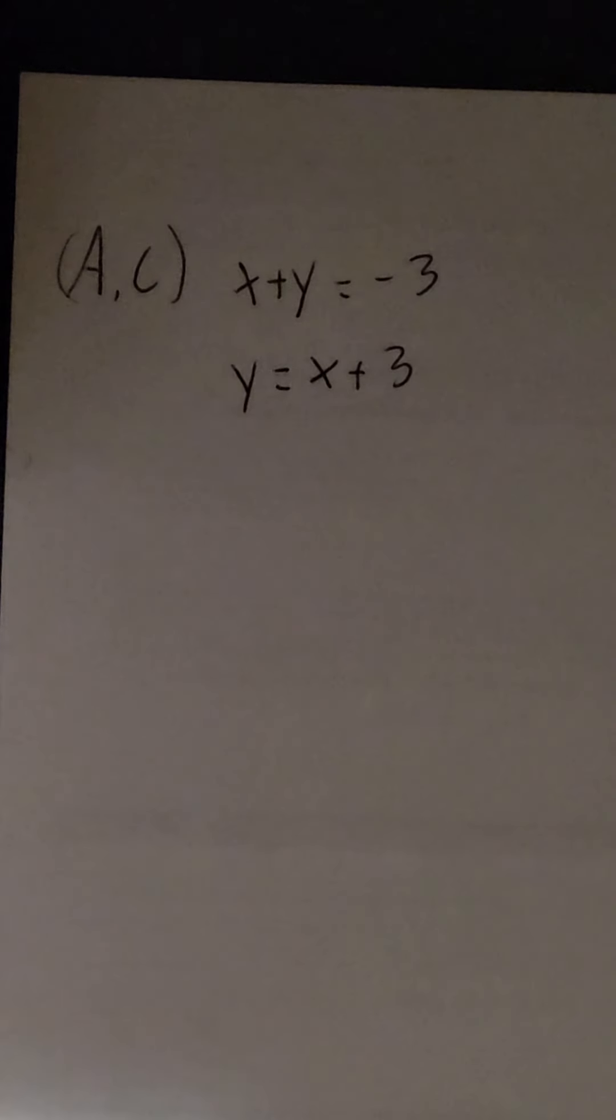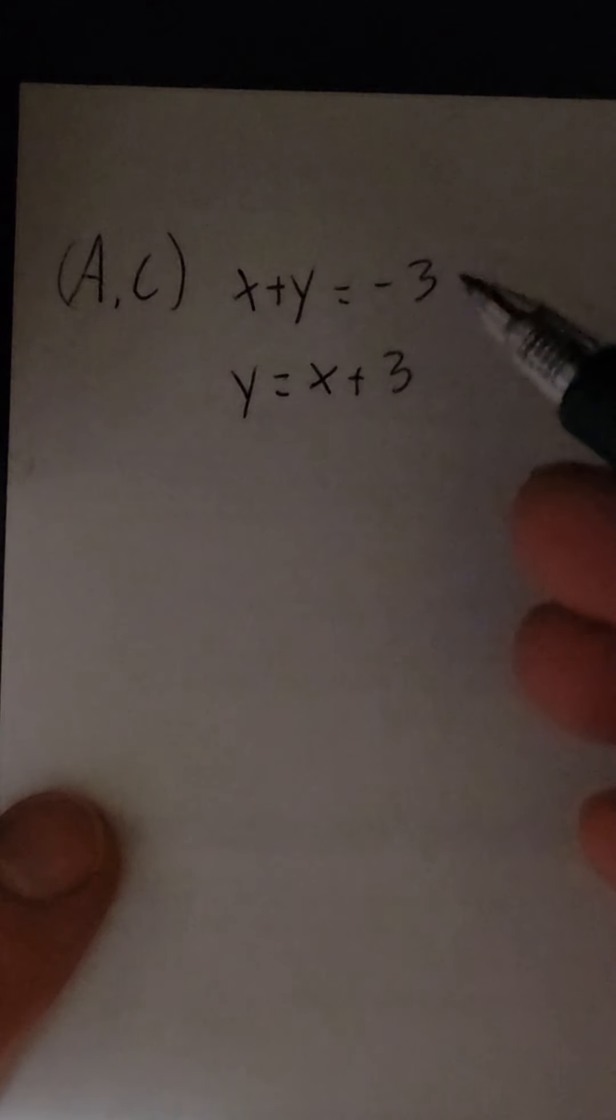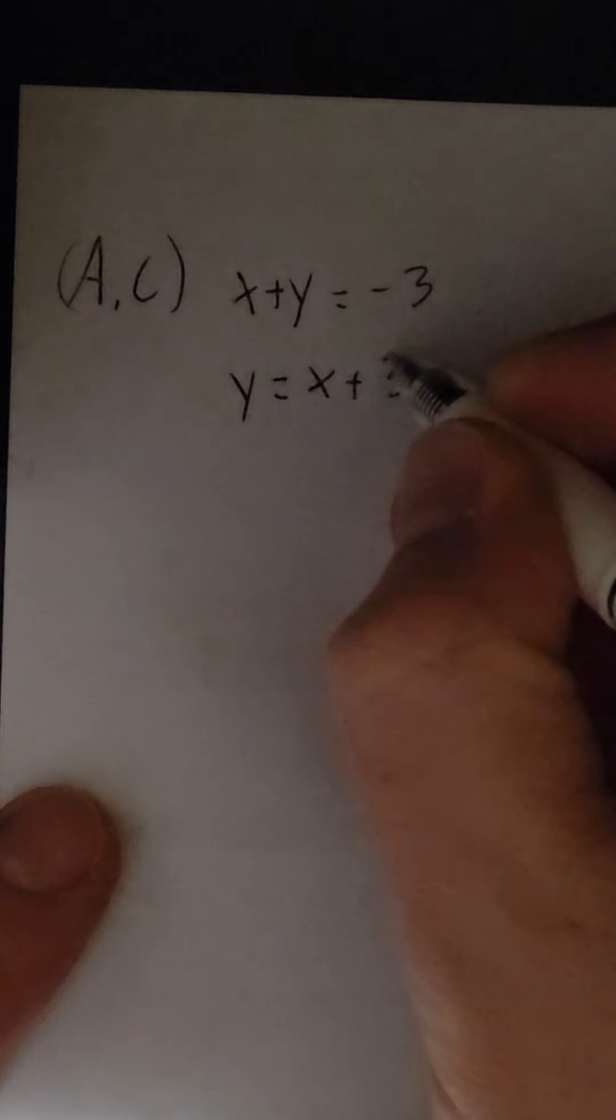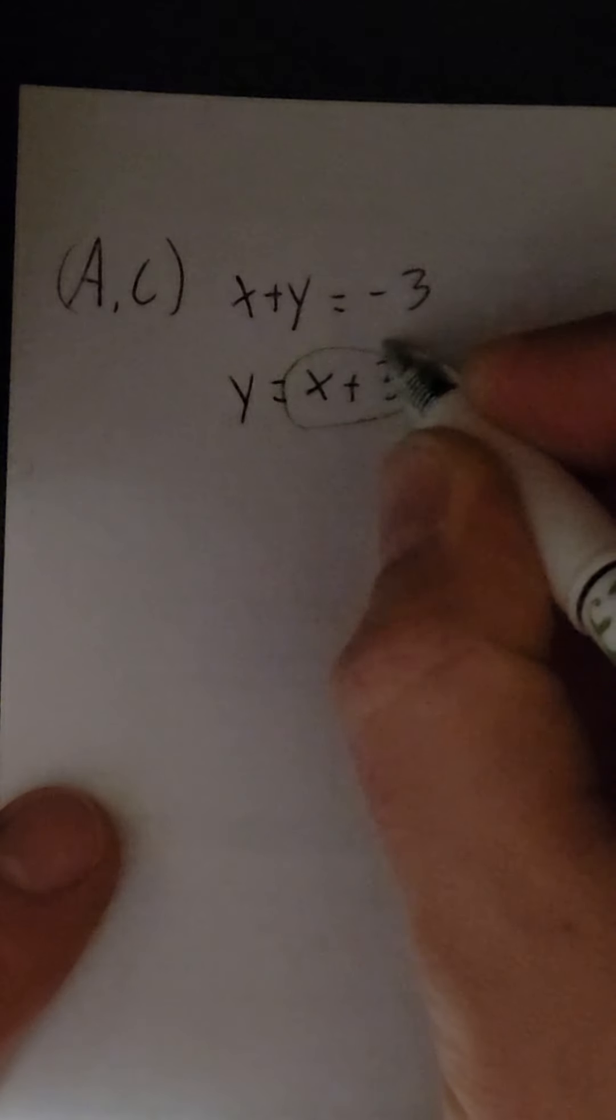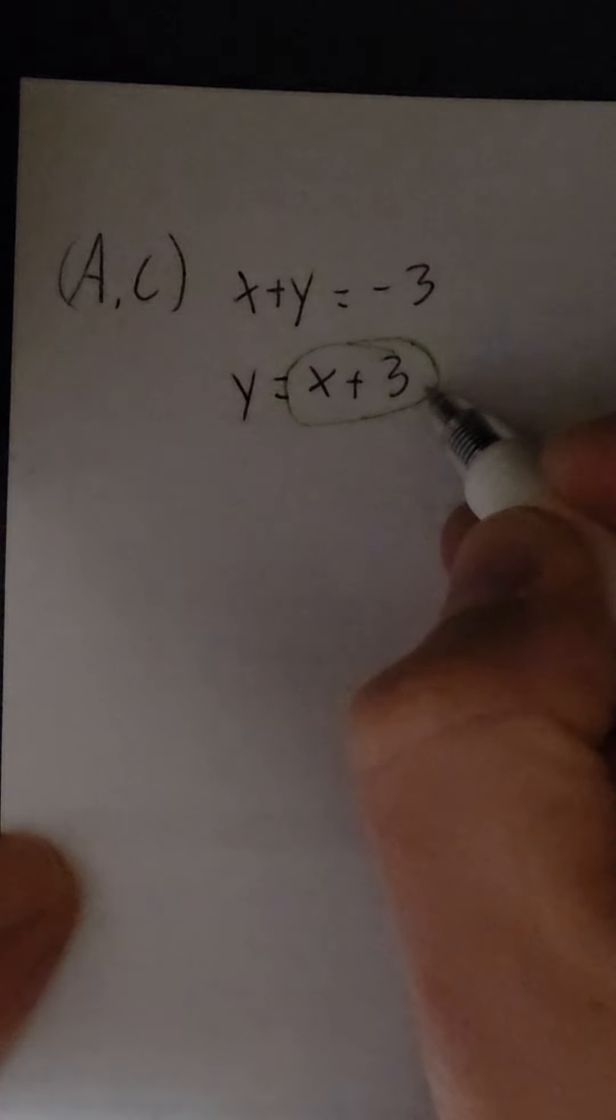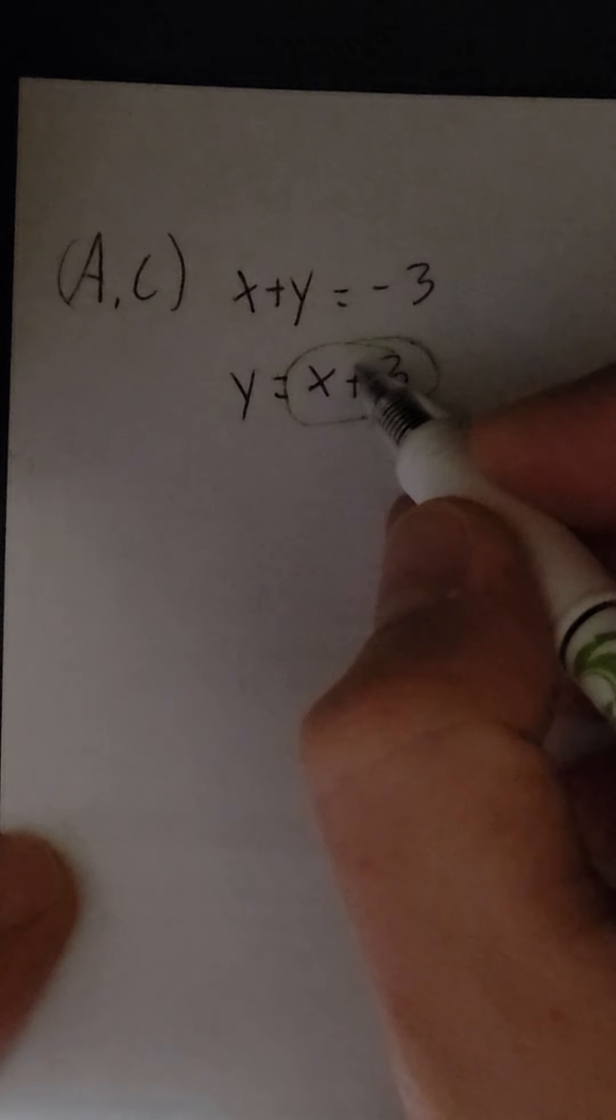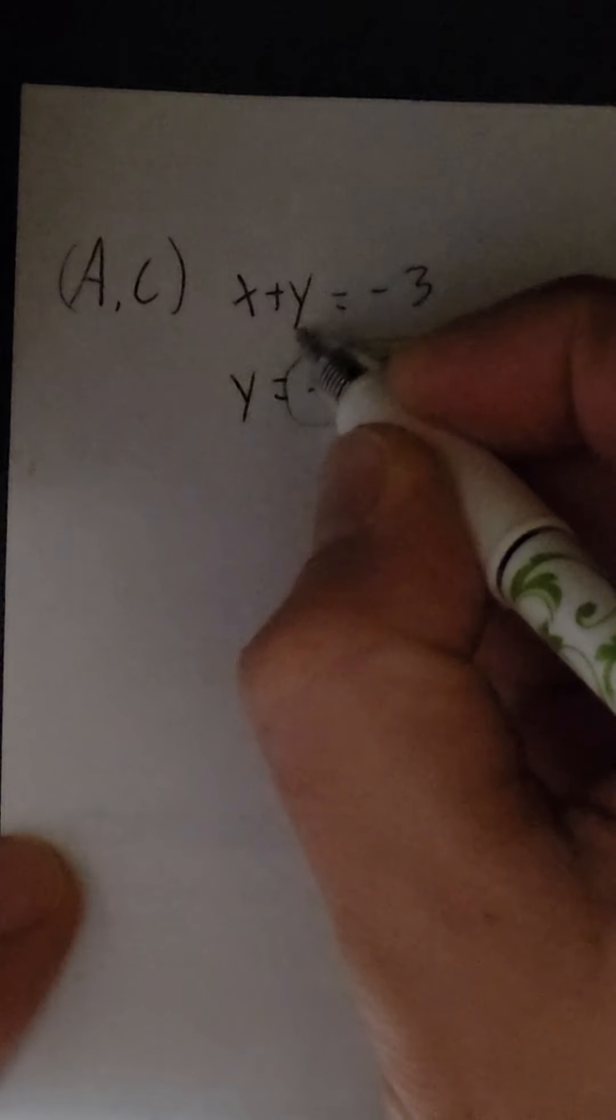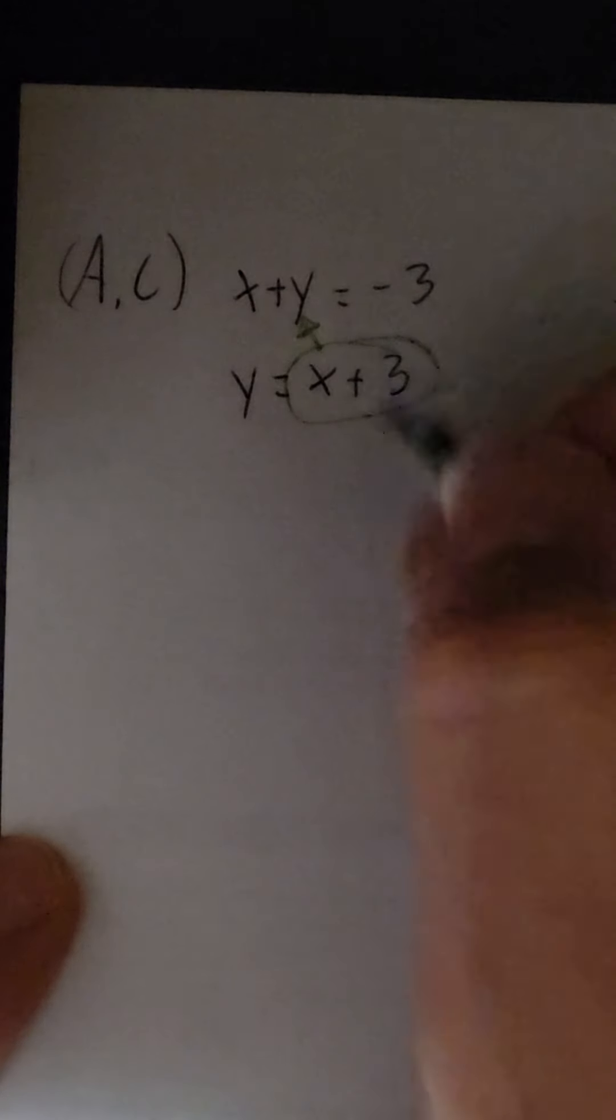So let's go down and do the first one, problem A.C. When we're using solving by substitution, we want to look to see if one of the equations is set up where it says y equals something or x equals something. When it does, go ahead and circle it up. Since this says y equals x plus 3, circle up the x plus 3.